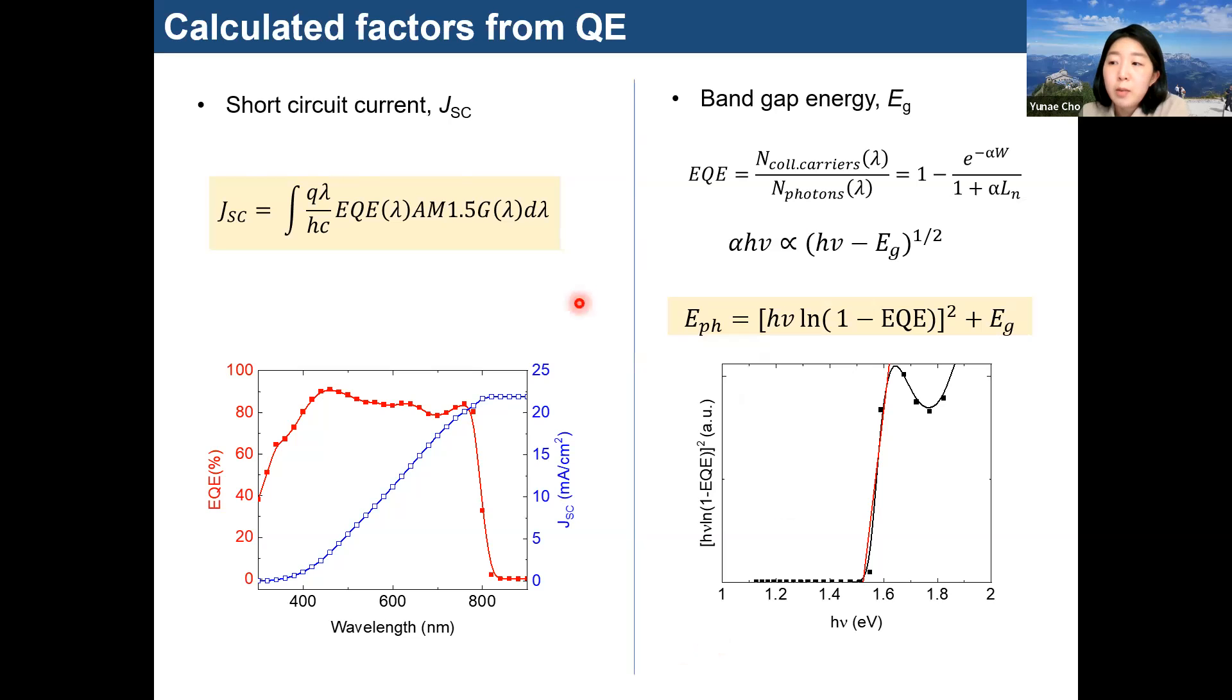Next, these are factors we can calculate when we are measuring the QE. The measured QE is multiplied by the solar spectrum, and this integration shows the JSC short-circuit current. And then we can obtain the bandgap energy by these formulas of QE measurement. These data are the results of our lab's solar cell device.